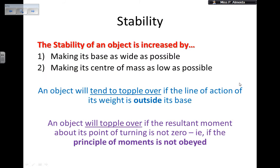So what happens is, an object will tend to topple over if the line of action of the weight is outside the base. The place where you draw a line from the center of mass directly downwards — where the force of gravity is acting on the object — if that line is outside the base, or outside the pivot, which is the point where the object is going to turn, then the object will tend to topple over. An object will definitely topple over if the resultant moment about its turning point is not zero — meaning if the principle of moments is not obeyed.